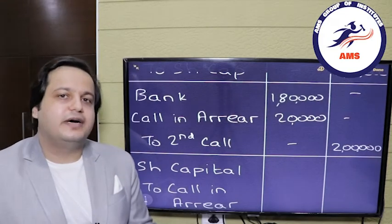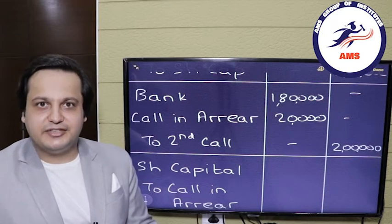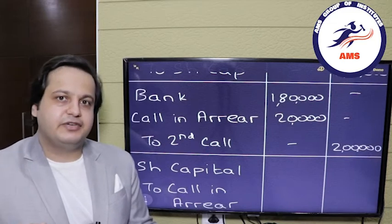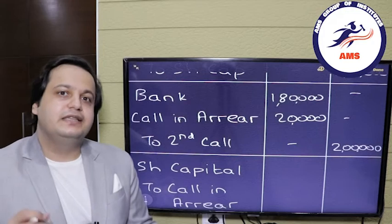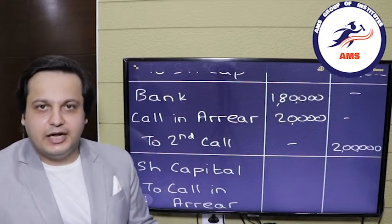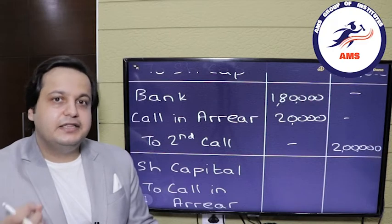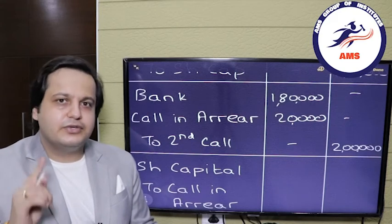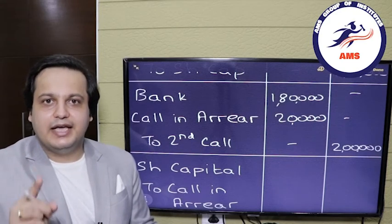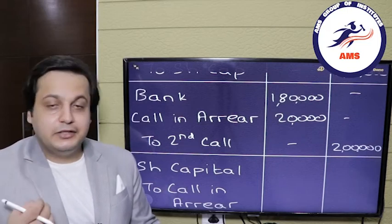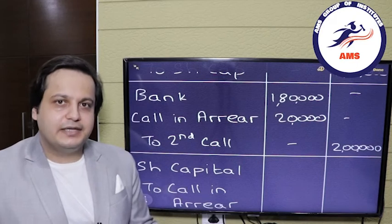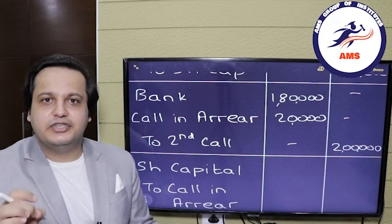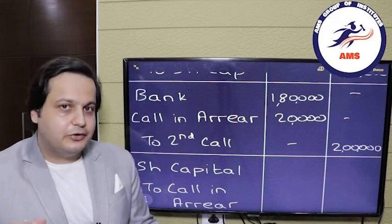We have already seen how to pass the journal entry for forfeiture of shares. The entry is share capital account debit, to all the unpaid calls, to the balancing figure — the share forfeiture amount. In this case we are using the call in arrears account. So instead of writing the names of the defaulting calls — first call and second and final call — we use only one account: call in arrears. The journal entry is: share capital account debit, to call in arrears credit, to share forfeiture account credit.